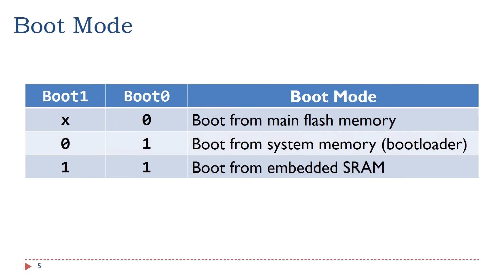Most Cortex-M processors support at least three different boot modes. The processor can boot from the in-chip flash memory, the system memory, or the in-chip SRAM. The code stored in the system memory is called a bootloader. The bootloader is usually provided by chip manufacturers. A bootloader can upgrade the firmware inside the internal flash memory. All STM32 microprocessors come with a pre-programmed bootloader in a read-only memory region called system memory. However, sometimes you want to develop a custom bootloader. For example, you may want to encrypt the firmware and put it on the internet so that customers can upgrade the firmware. In this case, you have to write a custom bootloader to decode the encrypted firmware.